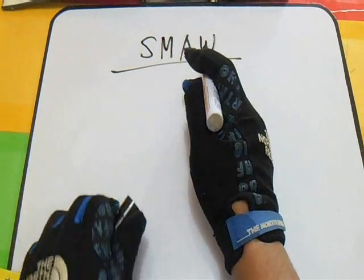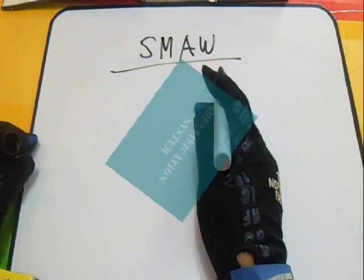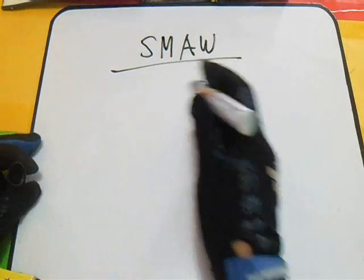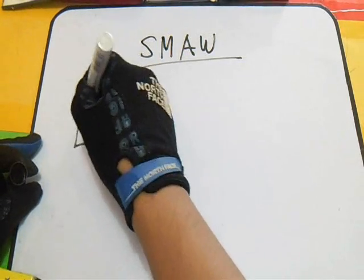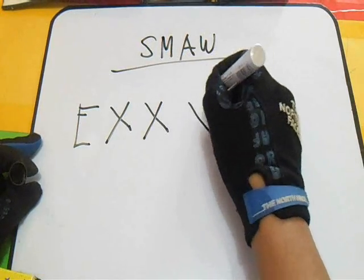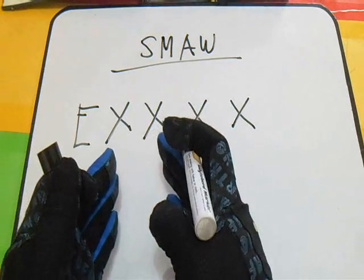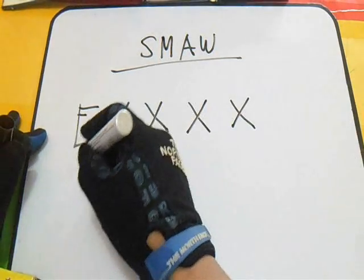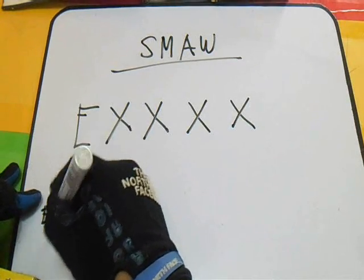So we have an identification system for the SMAW electrode. The format is E-X-X-X-X. The meaning of 'E' is electrode.